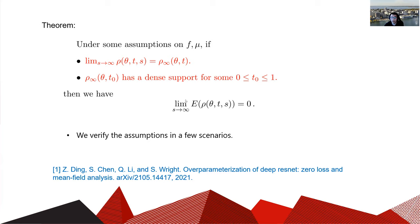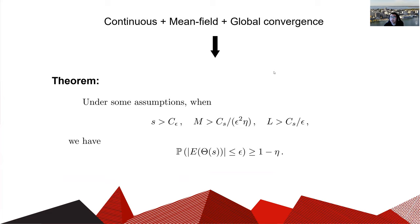Combining the global convergence results with the continuous limit result and the mean field limit result, we can prove our main result. This shows that when m and l are large enough, the cost function is close to zero with high probability.